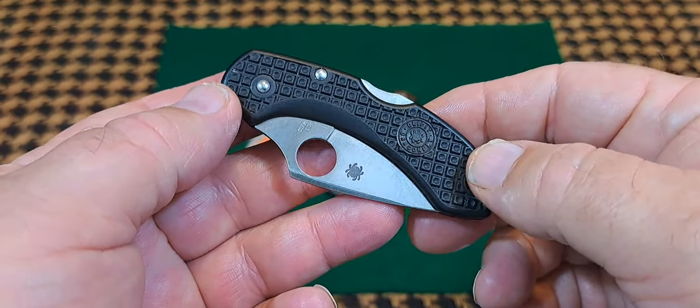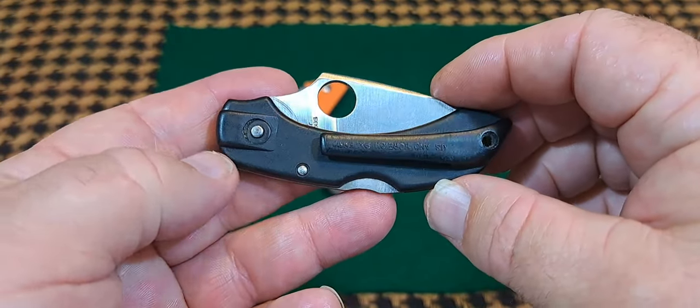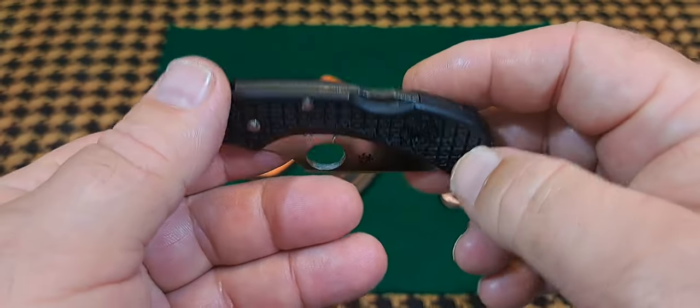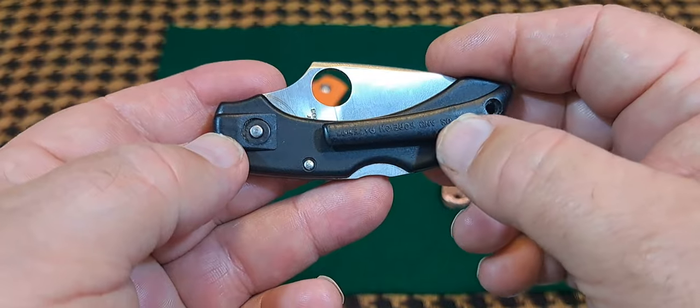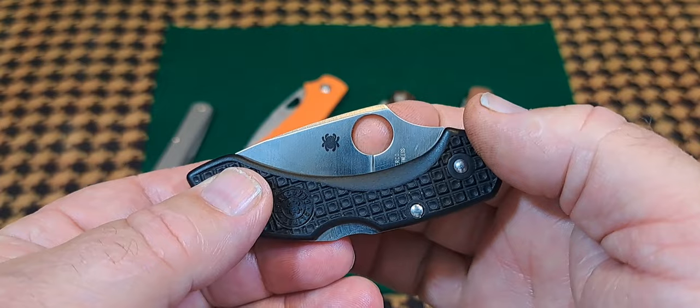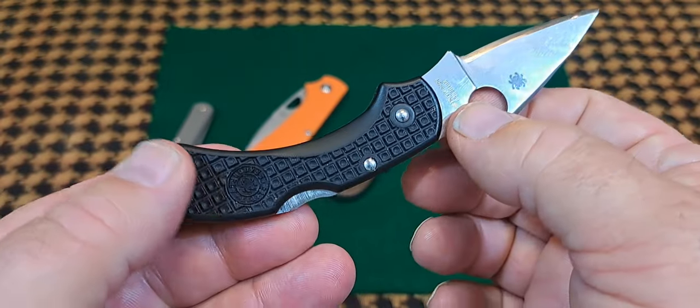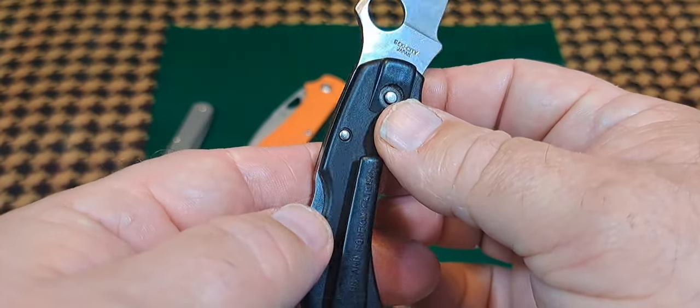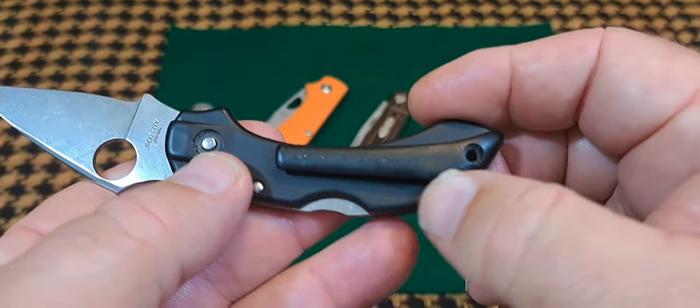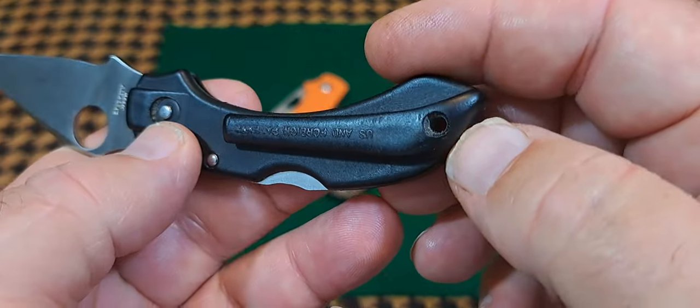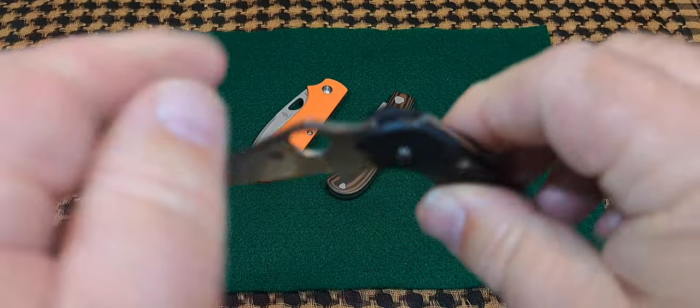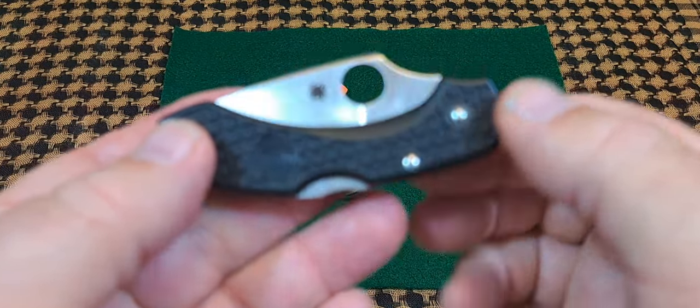If you look at this knife, this was a very early Spider Co knife. You can see it has FRN molded on both sides, and it has the clip on it. The claim to fame for this knife was the Spidey hole, which allowed you to open it with one hand.